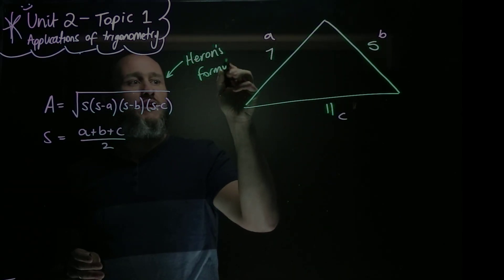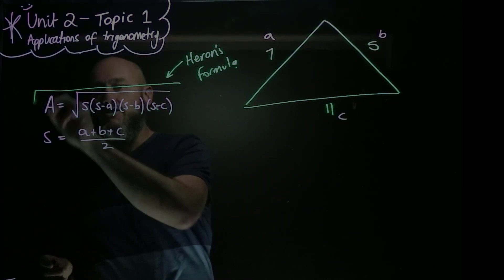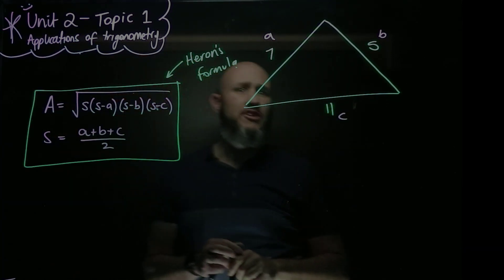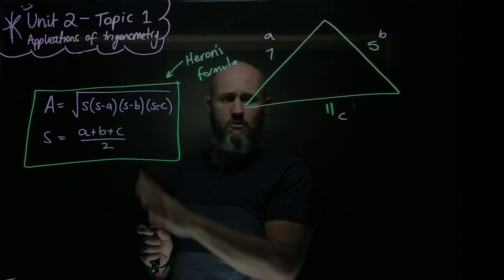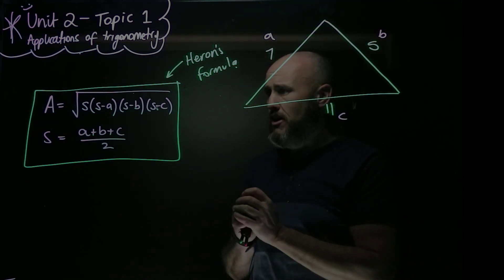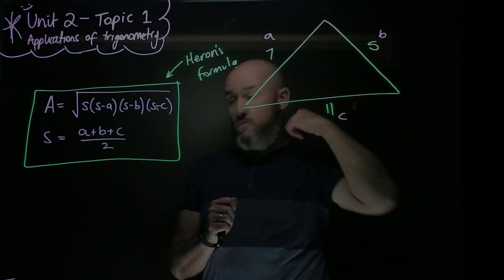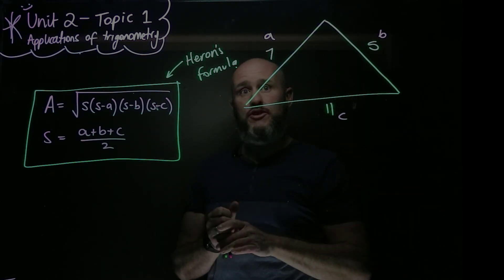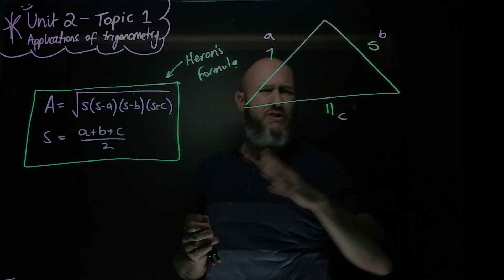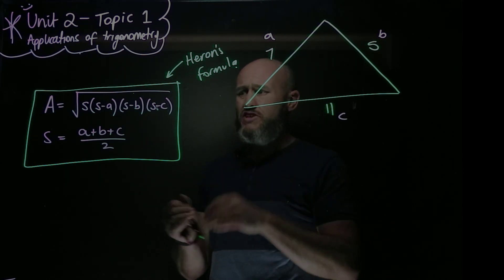And before you stress out too much, it's on your formula sheet. So you don't have to memorize it. But you do have to know how to use it. Heron's formula right there. So you know Heron's formula. And you've got your triangle with your side lengths. I could prove it to you, but we're not going to do that. We need a little bit of the stuff that we're going to learn later on. We're just going to use it.